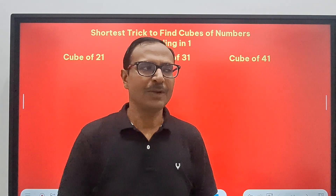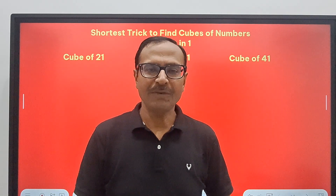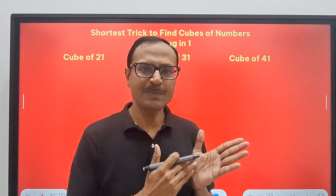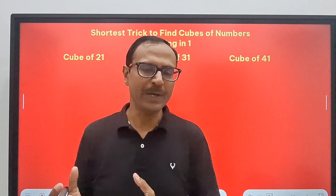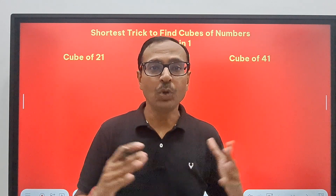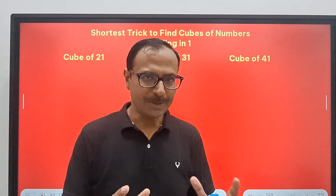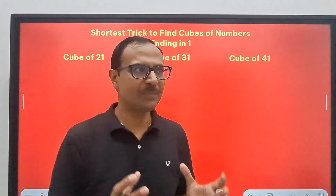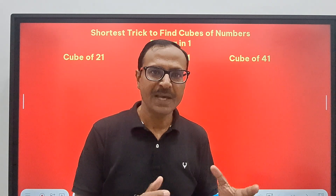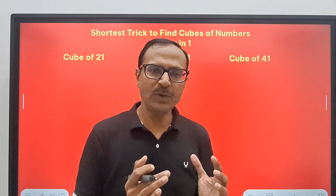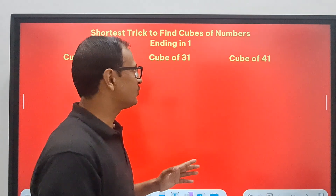YouTube is full of videos for cubing, but if you watch those individual videos they will only use the identity: (a + b)³ = a³ + 3a²b + 3ab² + b³. There is no other method which helps you in finding the cube of two-digit numbers. So I am going to explain in this video how you can simplify this process, and probably this video will be in different parts.